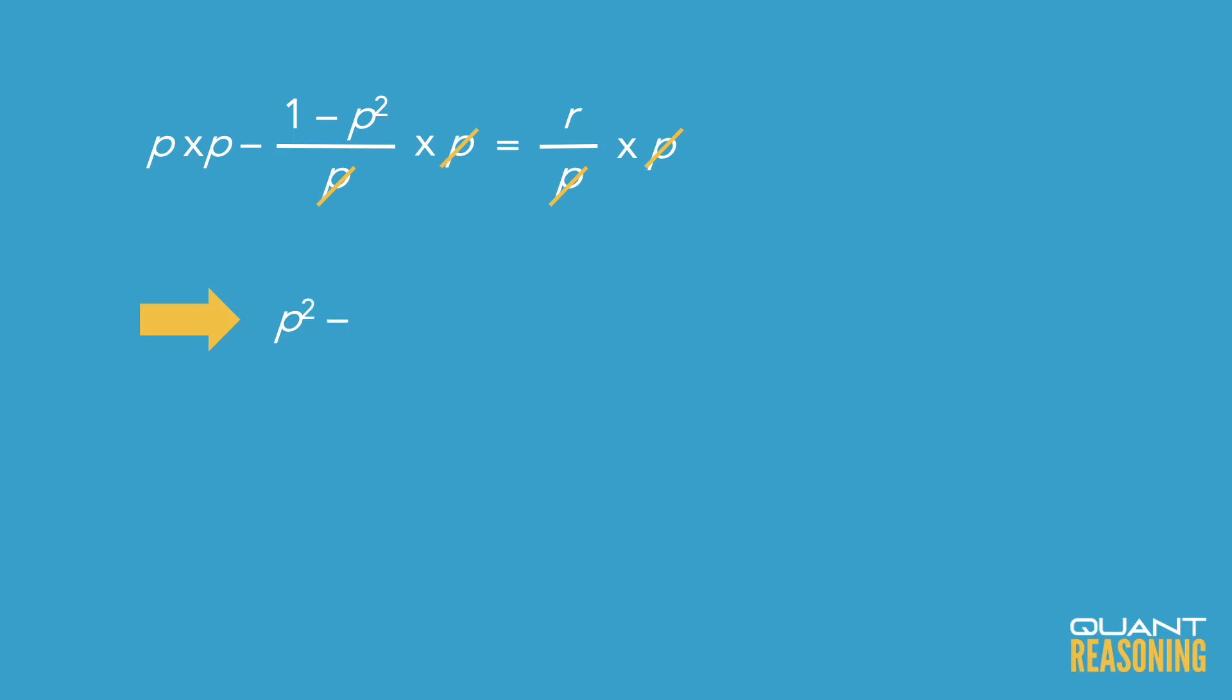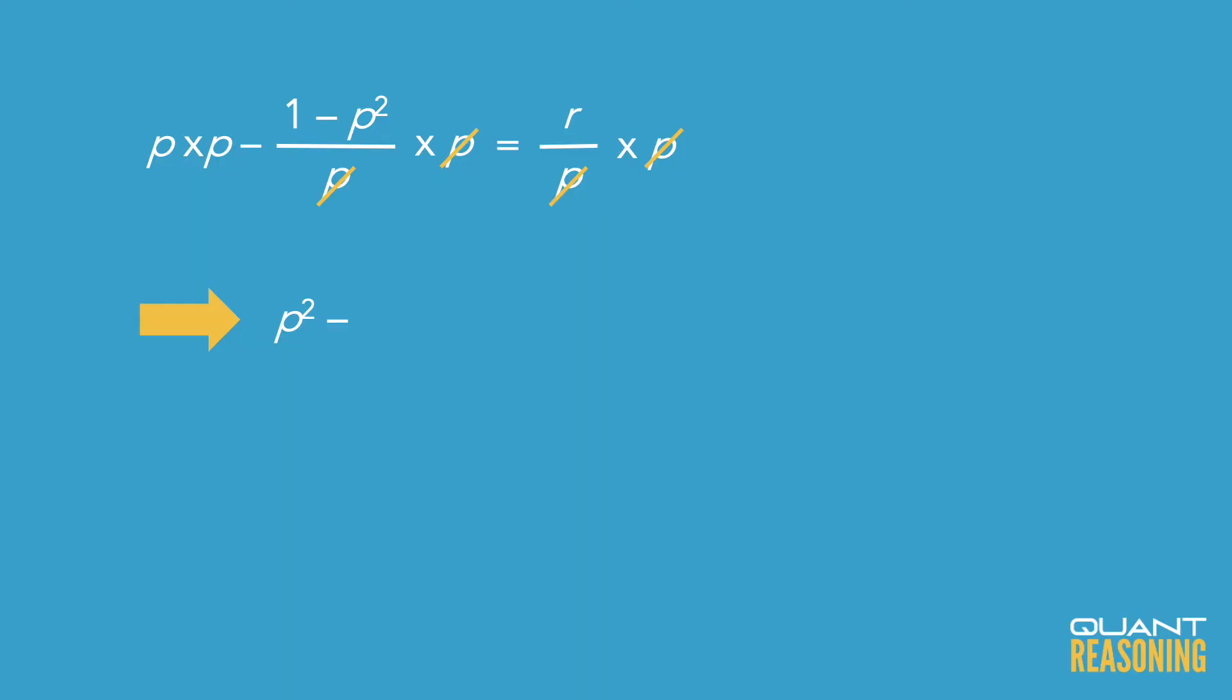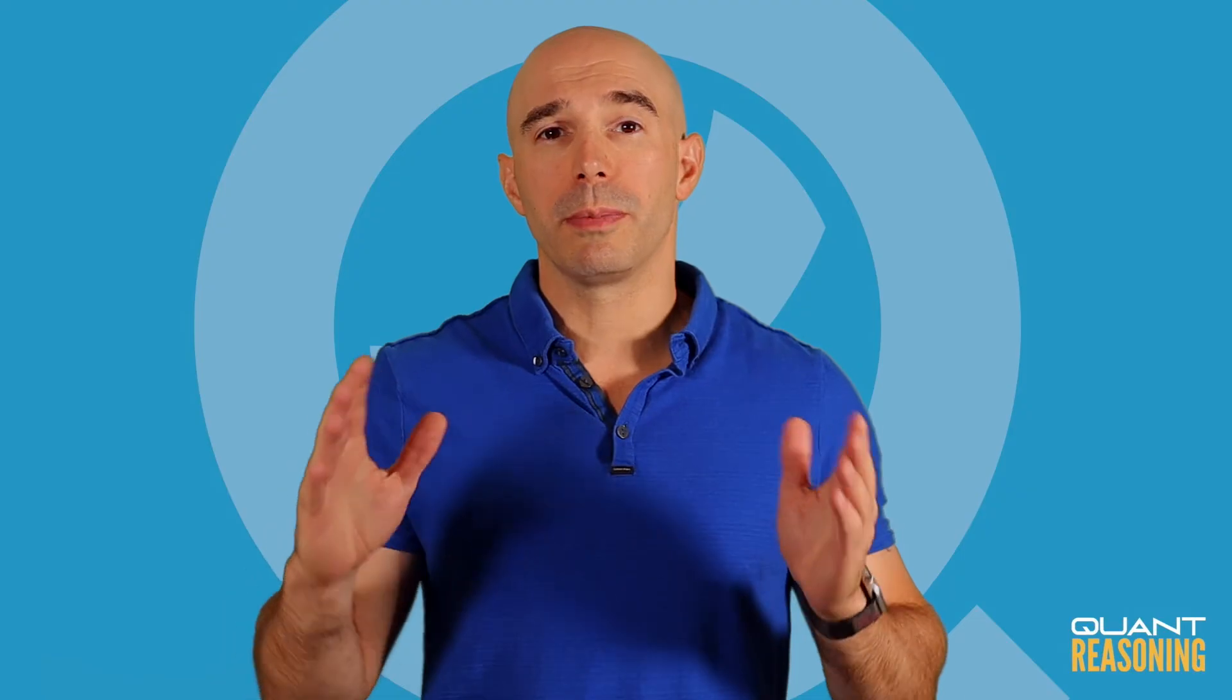And then we have a minus, and there's a p there in the denominator as well, so that p in the denominator would get reduced. You should probably use parentheses for that numerator so that we don't make any mistakes.